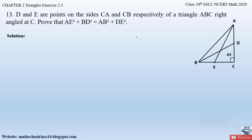Let us write down what we have to prove in the solution. To prove: AE² + BD² = AB² + DE².